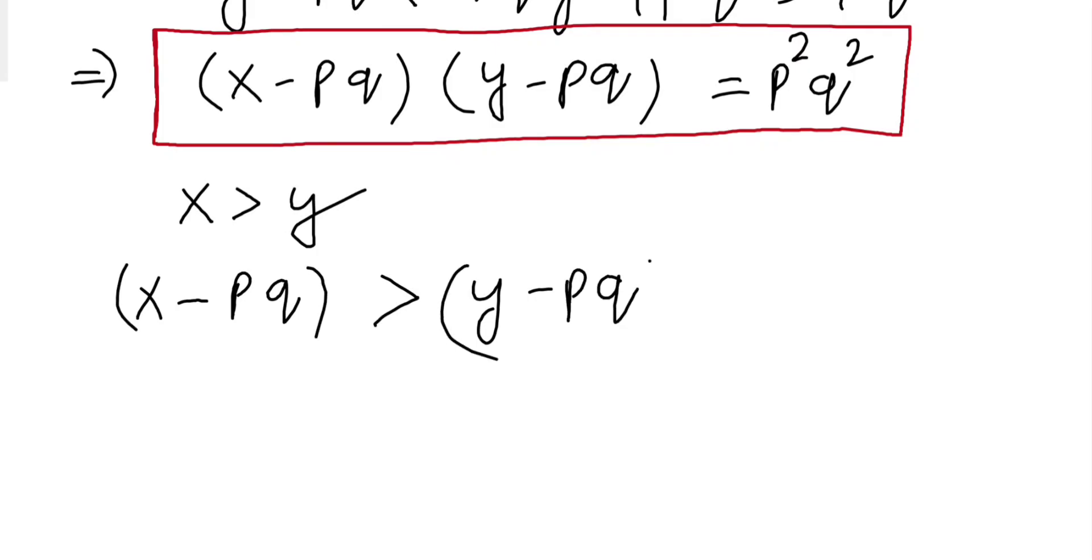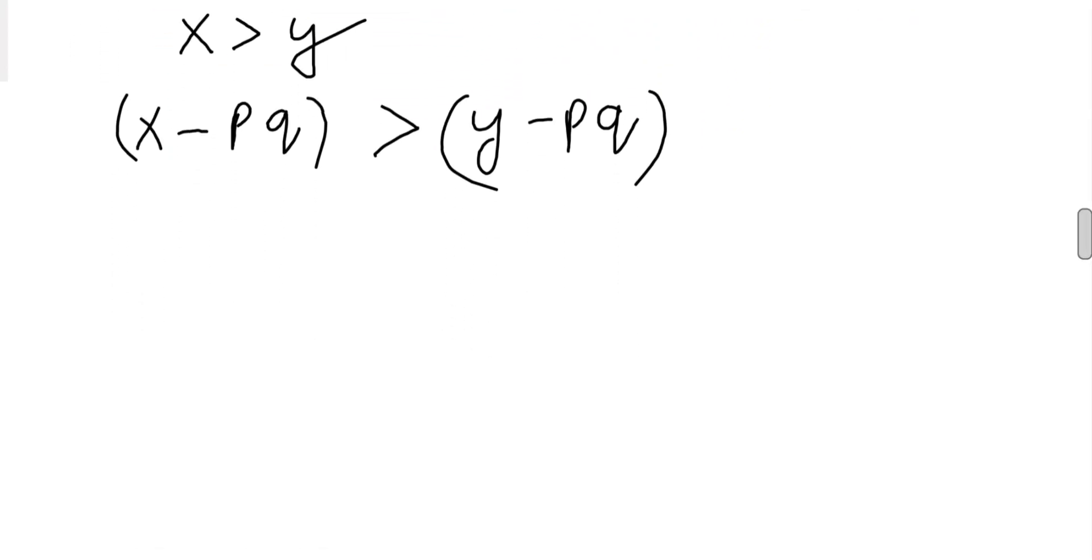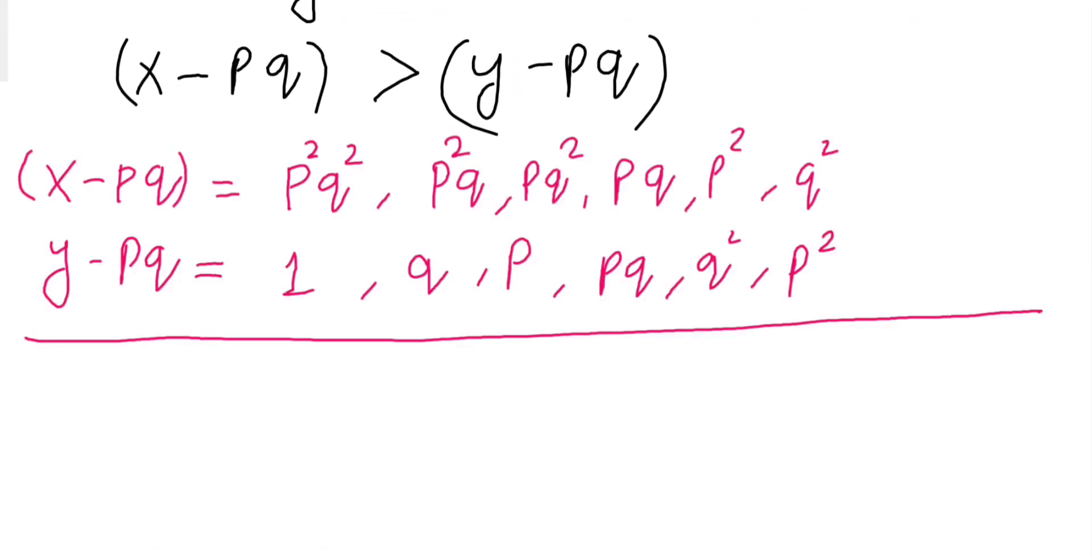Now, collect all the factors of p square q square. So these are all possible combinations of the factors of p square and q square.